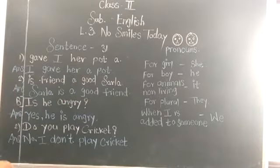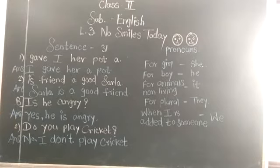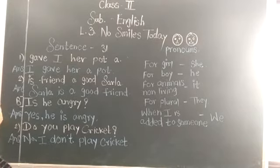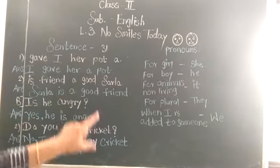In a sentence, you should first select the subject — that means the person who is doing the action. Then select the verb — that means the doing word, the action that person is performing. Then the object — with whom or what that activity is being done. If there is more information, you can arrange it before the object.